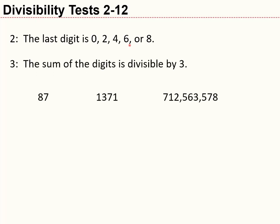Maybe you haven't heard this one before — the divisibility test for 3. The sum of the digits is divisible by 3; if that's true, then the number is divisible by 3. Here are three examples. How about the number 87? Is 87 divisible by 3? I add the digits: 8 plus 7 equals 15, and 15 is divisible by 3. So yes, 87 is divisible by 3.